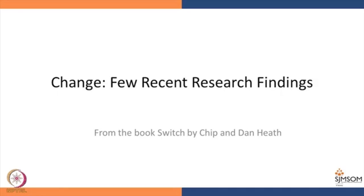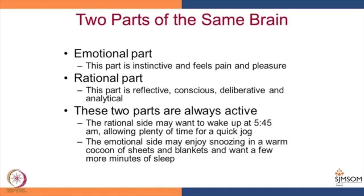These questions we will revisit looking at this framework. They are not the researchers for all the findings, but they have compiled so many findings about change in human behavior. The brain has two parts — there is an emotional part and there is a rational part. The emotional part is instinctive, it feels pain and pleasure. The rational part makes logic, understands research papers — that is where we want to attack for awareness building. It is reflective, deliberative, and analytical.